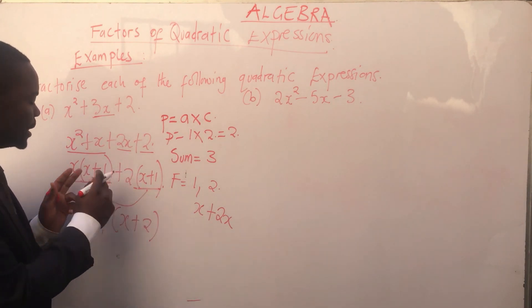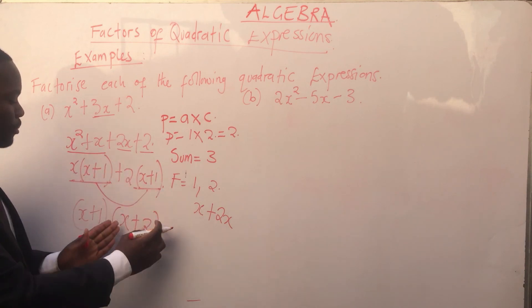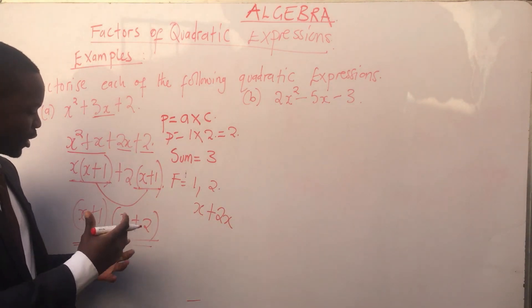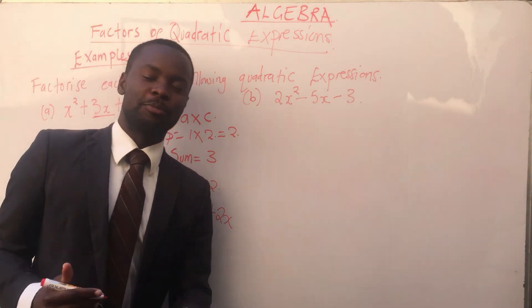Or if you want, since x + 1 is common, just take one x + 1, and whatever is outside, bring them together. So this is our answer. It means we have factorized a quadratic expression using factors of a quadratic expression.